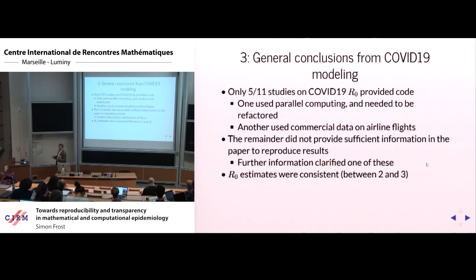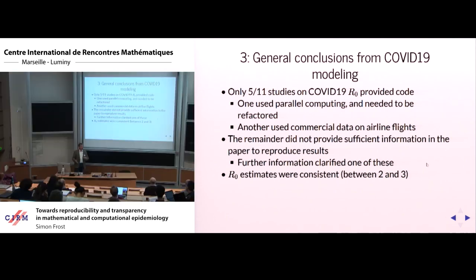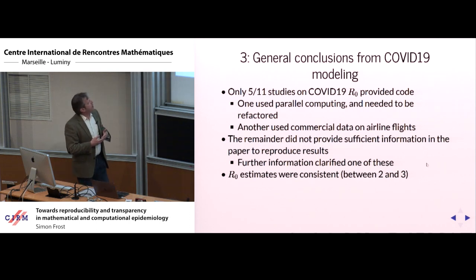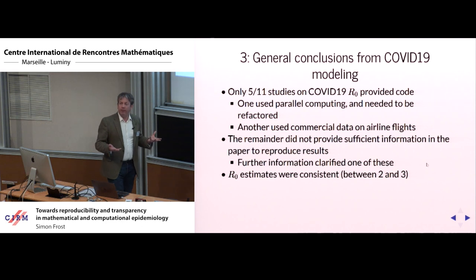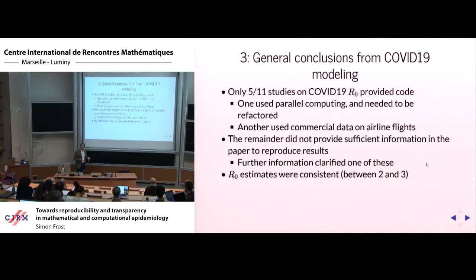Overall, only five out of eleven studies I looked at for inferring or modelling R0 provided any code. One used parallel computing requiring reworking to run locally. Another used commercial airline flight data you'd have to purchase. The remainder didn't provide enough information to reproduce them. That said, the R0 estimates were all fairly consistent between two and three — which, unless you're talking about polio or measles, is essentially R0 for everything.